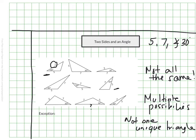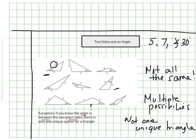There are exceptions to this. If the angle they're specifically talking about is between the two given sides, then there is actually just one unique option. For example, if the 30 degrees is in between the 7 and the 5, that specific placement of the angle produces just one unique triangle, not multiple options. So keep that in mind.